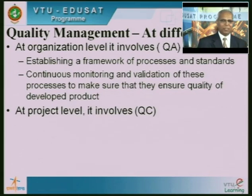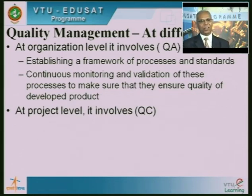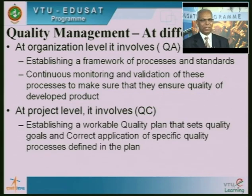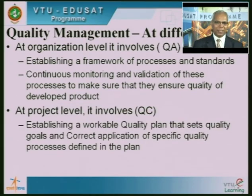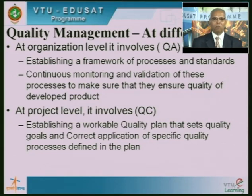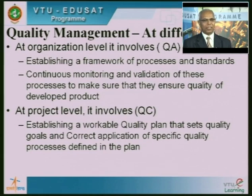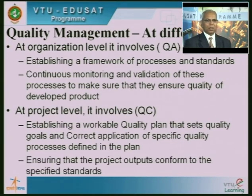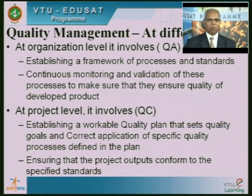At the project level, quality management involves QC — quality control, basically testing. This includes establishing a workable quality plan that sets quality goals and the correct application of specific quality processes defined in the plan. This is a specific project plan evolved for a project depending on its criticality, to make sure that the software meets the necessary quality standards. Project outputs conforming to the specified standards is also ensured as part of quality control.